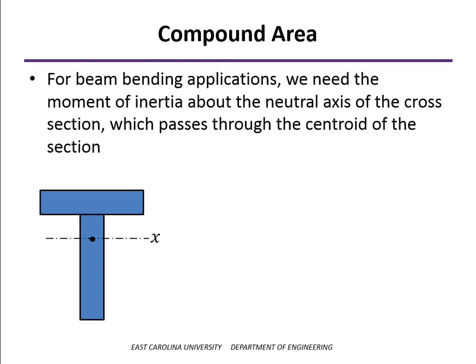We'll use this to find the moment of inertia of a compound area. A compound area is simply one that's made up of several simple shapes, and most commonly in structural analysis, it's going to be made up of a series of rectangles. The examples we're going to show are compound areas made up only of rectangles, such as this T-beam.